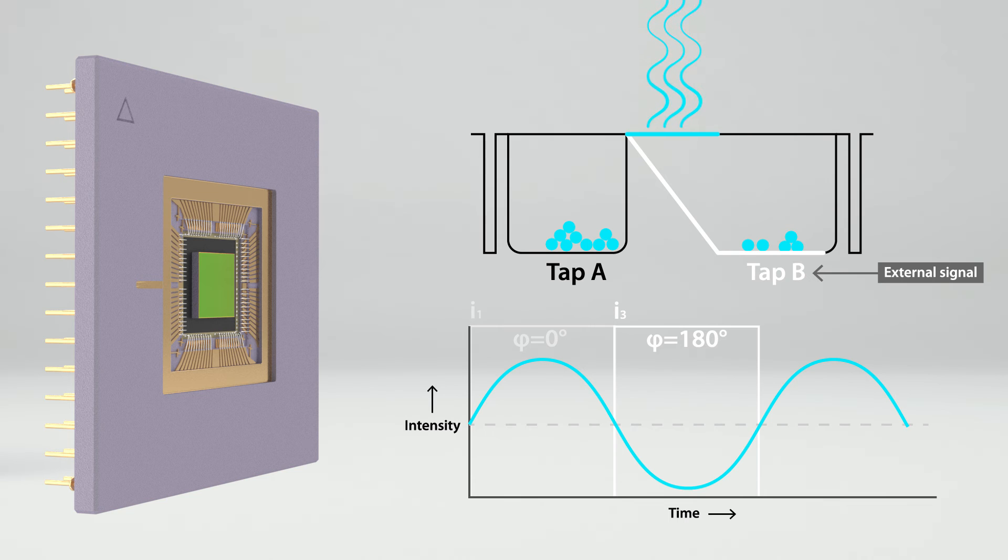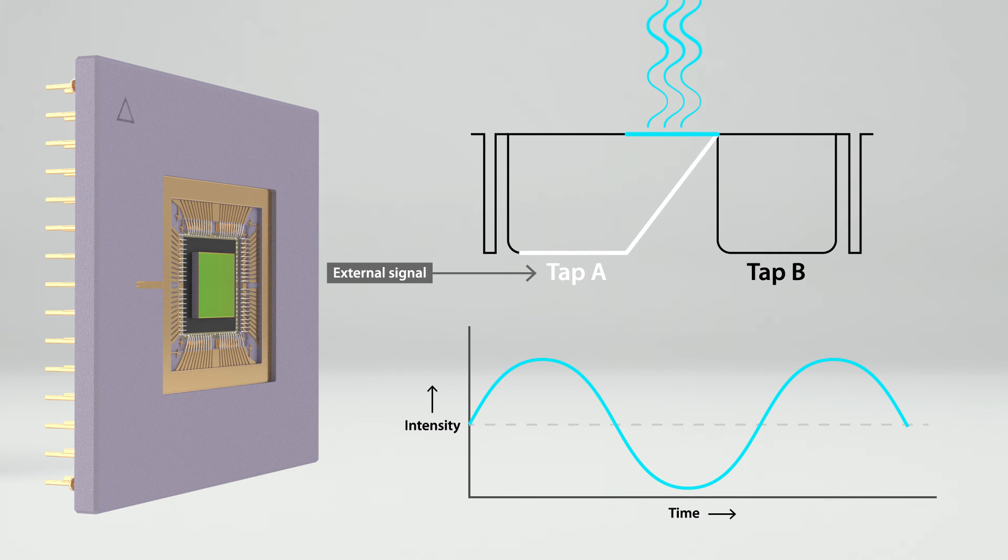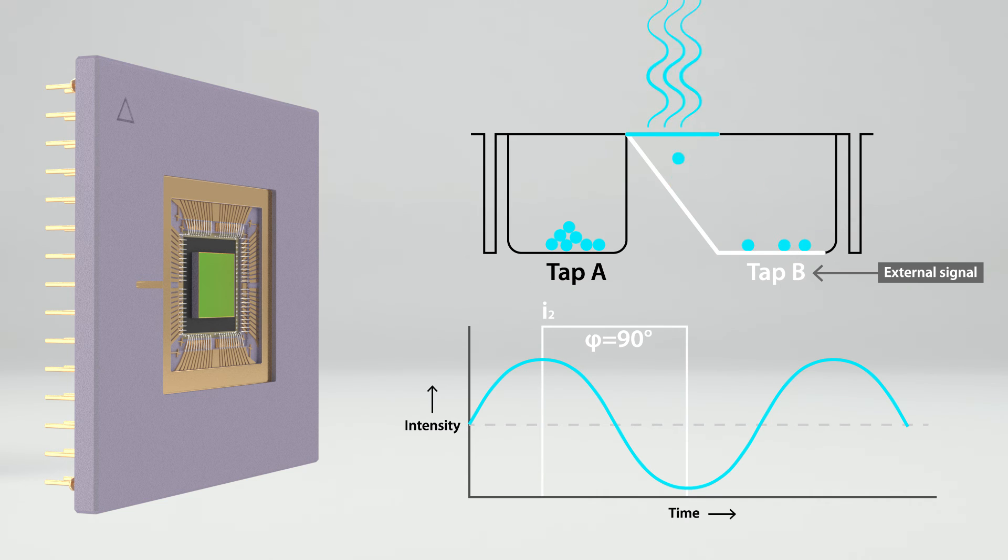The image sensor modulation is shifted relative to the excitation light. Then, a measurement is performed at a phase angle of 90 degrees. The charge carriers collected in tap A create image I2. Tap B samples the information at a phase angle of 270 degrees, creating image I4.